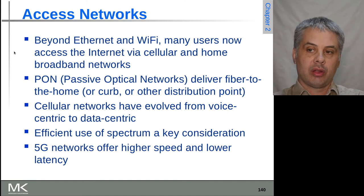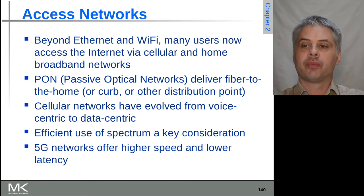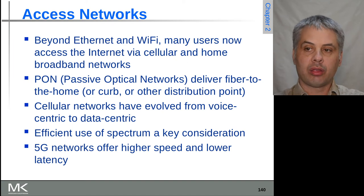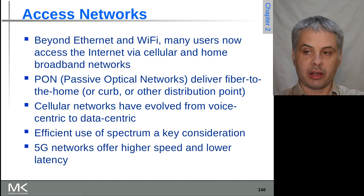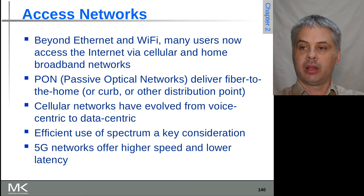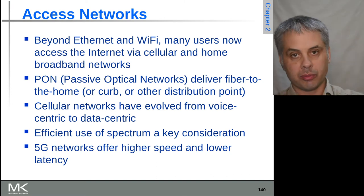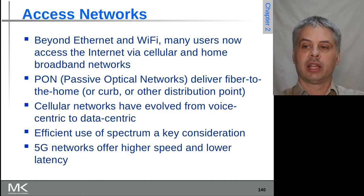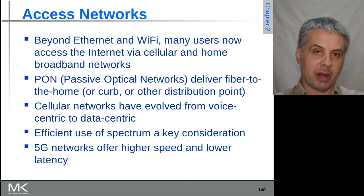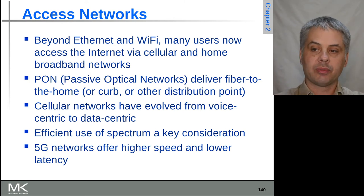At the other end of the spectrum, Bluetooth is very short range and relatively low bandwidth. We're now seeing more wireless approaches for connecting to the internet, including cellular networks, which are a much larger part of the mix. Also in terms of wired approaches, passive optical networks deliver fiber to the home, curb, or nearby distribution point, allowing efficient — meaning cost-efficient — connectivity.